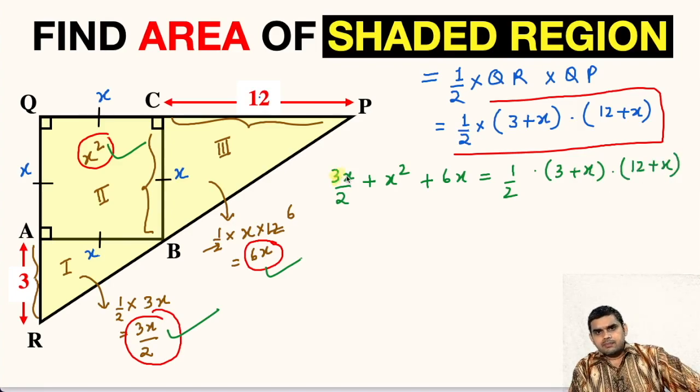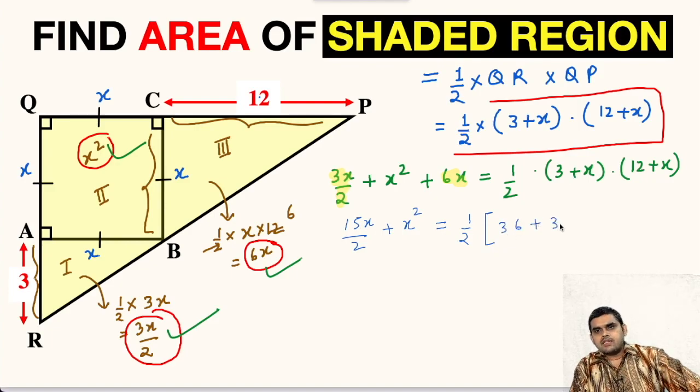First let us combine these two terms. This will give us 15X by 2 plus X square equals half, and we will multiply this.